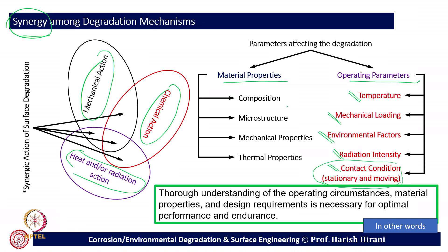For material properties, we consider composition — alloying may increase strength but deteriorate fracture resistance — microstructure, which changes significantly and affects surface toughness, mechanical properties such as strain and hardness, and thermal properties. When these properties and operating parameters are combined, we can determine what the degradation mechanism will be.